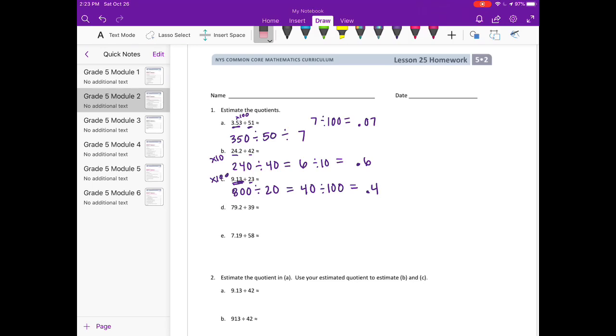D: 79.2 divided by 39. 79 is really close to 80, and 39 is close to 40. So I'll do 80 divided by 40. 80 divided by 40 is 2. Since I didn't multiply anything, I can just leave it as 2.